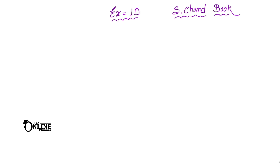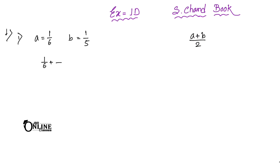For the previous one, please check the description box — the link will be there. In sum number 1, find a rational number between a and b, where a = 1/6 and b = 1/5. Whenever you want to find the rational number between two numbers, the formula is (a + b) / 2. So first you find the addition of 1/6 + 1/5, then divide by 2.